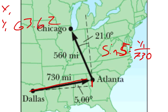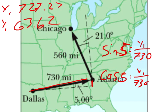Then our adjacent over hypotenuse is cosine. Cosine of 5 degrees equals X1 over 730 miles. X1 is approximately 727.22 miles. So that's Y1 and X1.